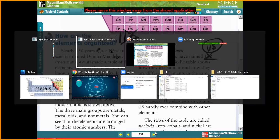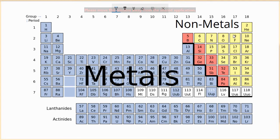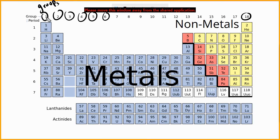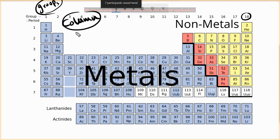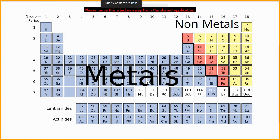In the periodic table we also have groups and columns. Look at the numbers across the top — one, two, three, four, up to eighteen. These vertical columns are called groups. We have 18 groups, or 18 columns, in the periodic table.